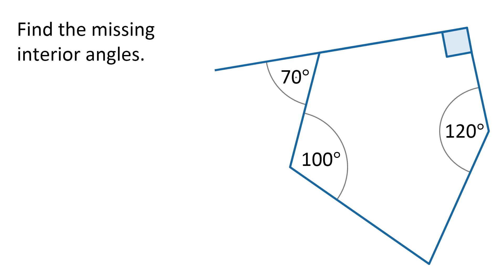So starting over here where we've got that 70 degrees as our exterior angle, we know that an exterior angle and its corresponding interior angle add up to 180 degrees. From that fact, if we subtract 70 degrees from 180, we get 110 degrees as the size of that interior angle.